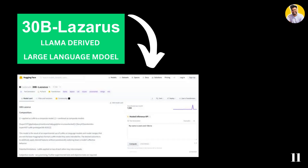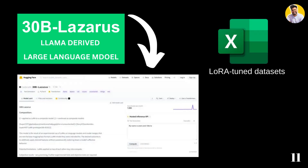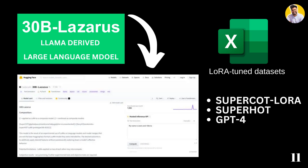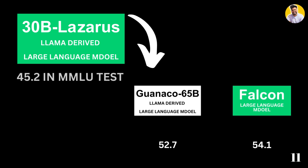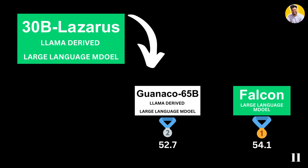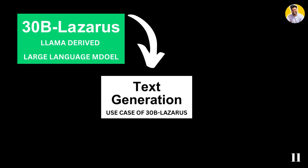Our next large language model is Lazarus, an open-source model developed from LLaMA. The developer used LoRA-tuned datasets from multiple models including SuperCOT, SuperHOT, GPT-4, and many more. As a result, this model performs much better on large language model benchmarks — scoring 81.7 in HellaSwag and 45.2 in MMLU, comparable to Falcon and Guanaco. If your use case is mostly text generation rather than conversational chat, then Lazarus with 30 billion parameters is the best choice.